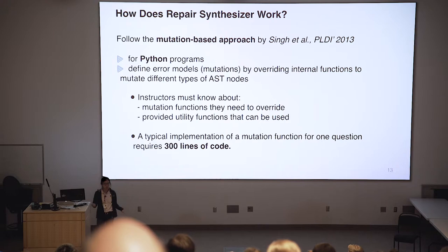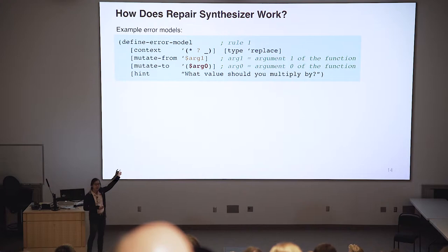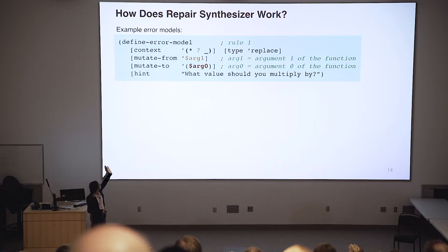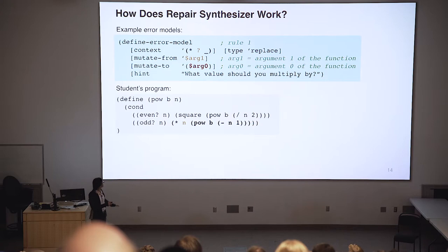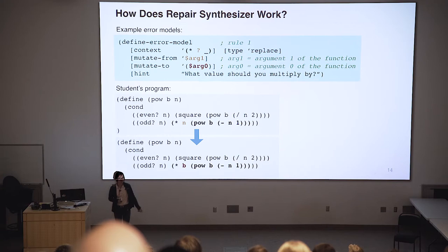What we do is take this concept but provide a much cleaner way to specify an error model or mutation rule. In our case, you basically define the context and say: I want to mutate that question mark in this multiplication expression. The question mark has to match 'mutate from' — in this case, it's arg one, meaning argument one of the function — and we want to try to mutate that to arg zero of the function. You can optionally specify the hint message, meaning that if we apply this particular rule, we'll print this message to the student. Here is the student program as seen earlier; if we apply this rule, it matches that expression and then changes N to B, because N is arg one and B is arg zero of the function.